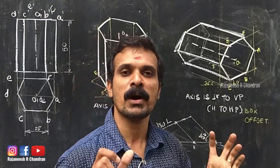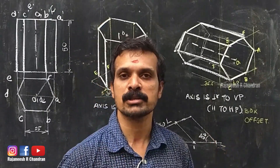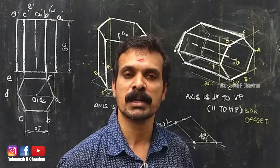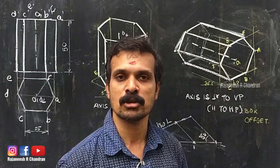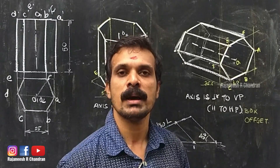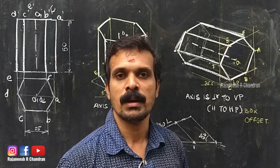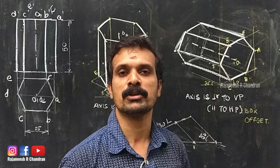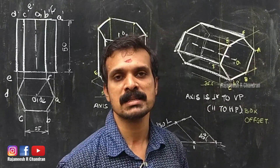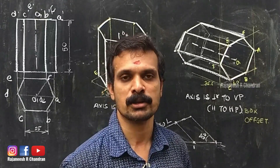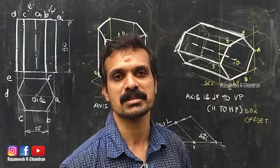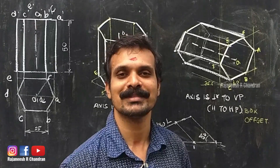I hope all of you have understood how to construct the isometric projection and the isometric view — with the axis perpendicular to the ground and parallel to the ground in different conditions. Thank you.